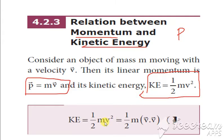Now, take this kinetic energy. This V can be written as V into V because V into V gives V square. So we are writing as half M V into V.